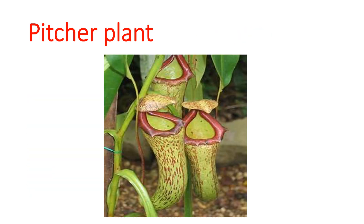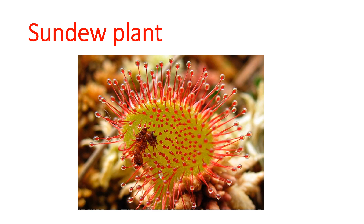The next example is pitcher plant. Can you see it is in the shape of a pot? The leaf is modified in the form of a pitcher, and there is another leaf which forms a lid. As the insect gets trapped in this pitcher plant, the leaf automatically closes and traps the insect inside.